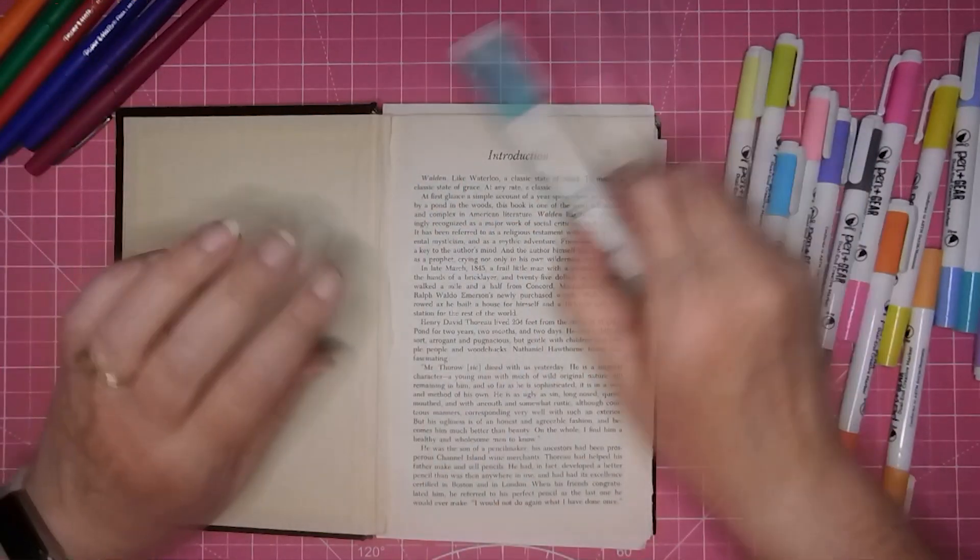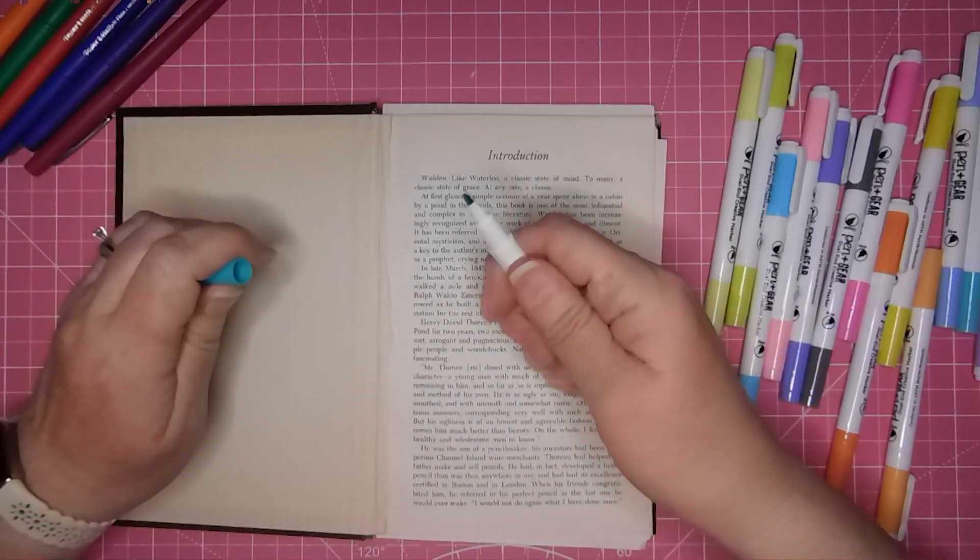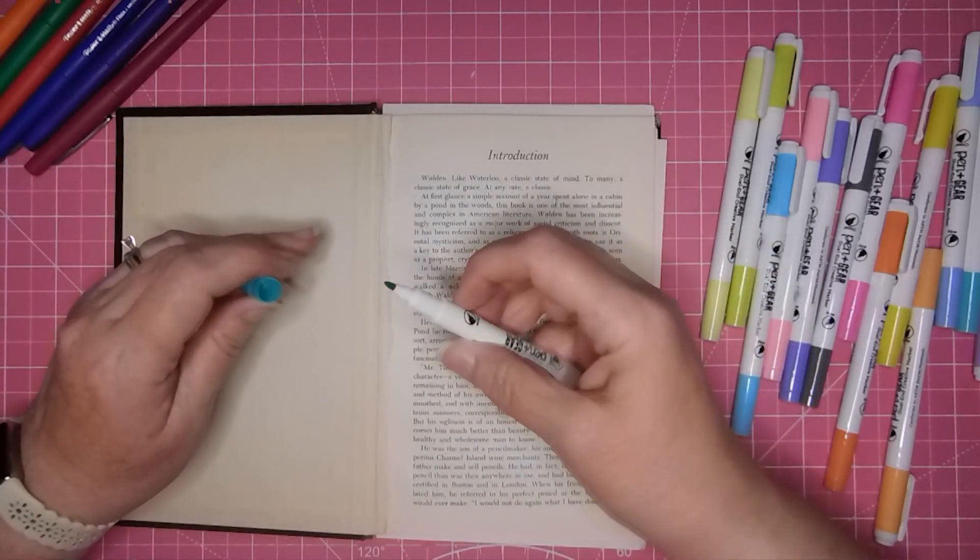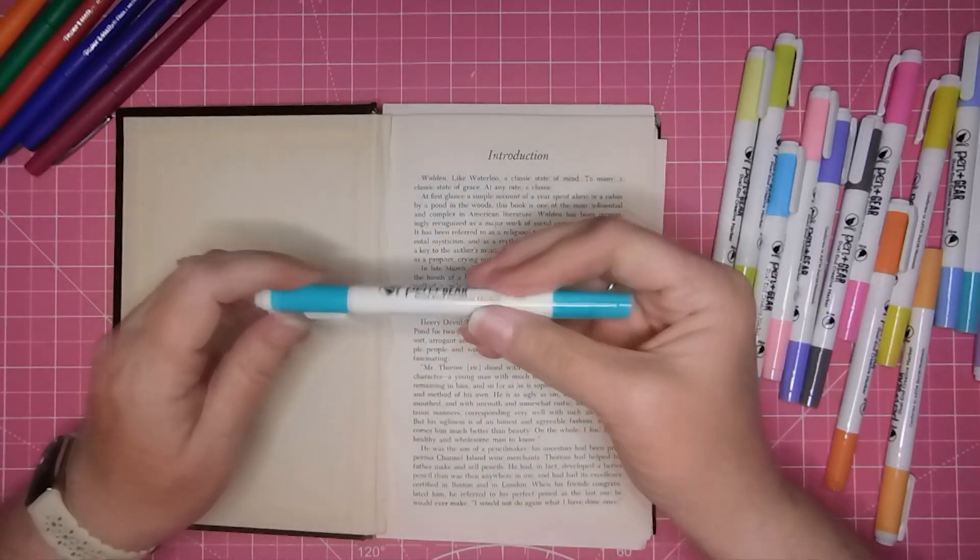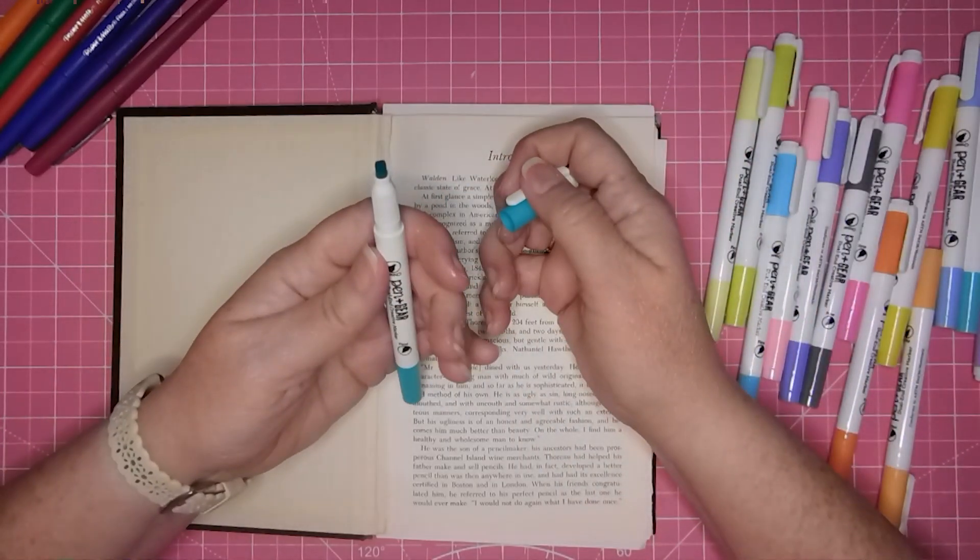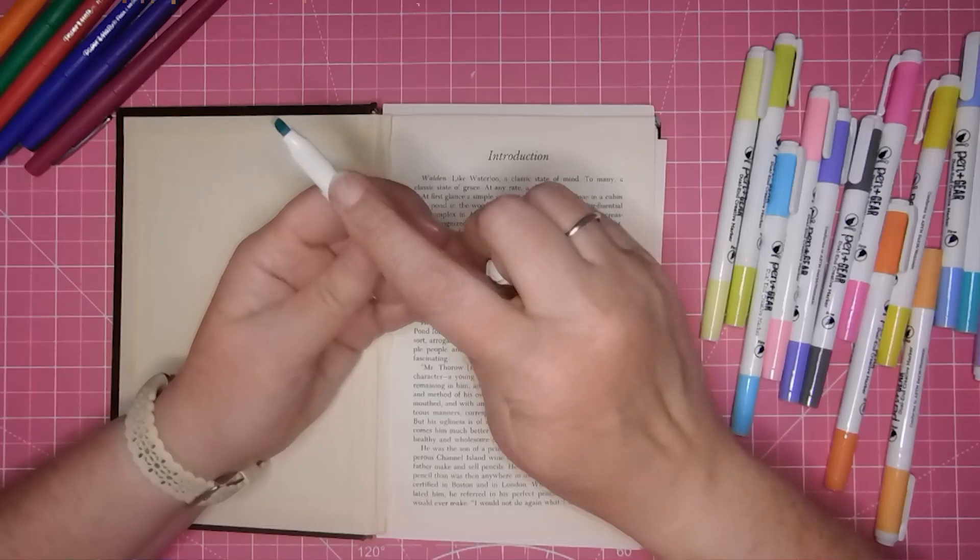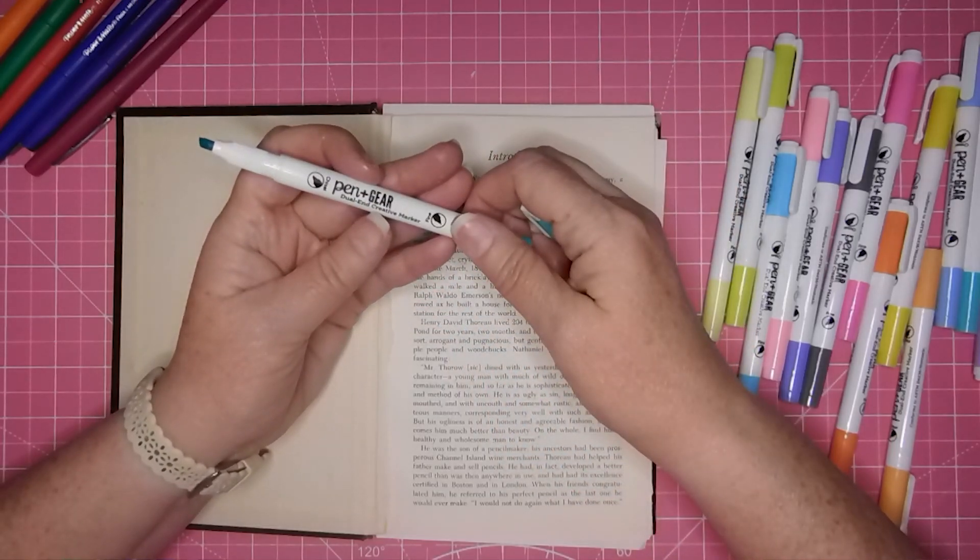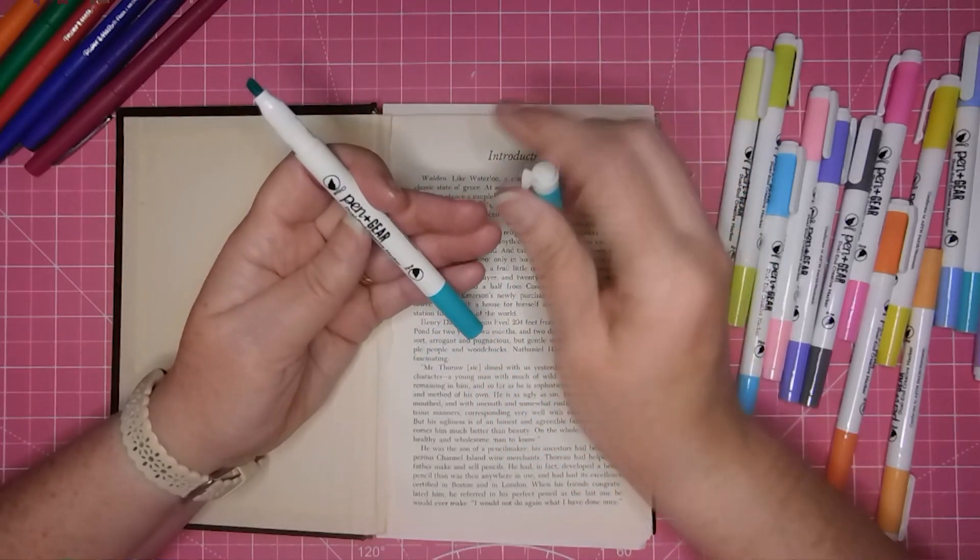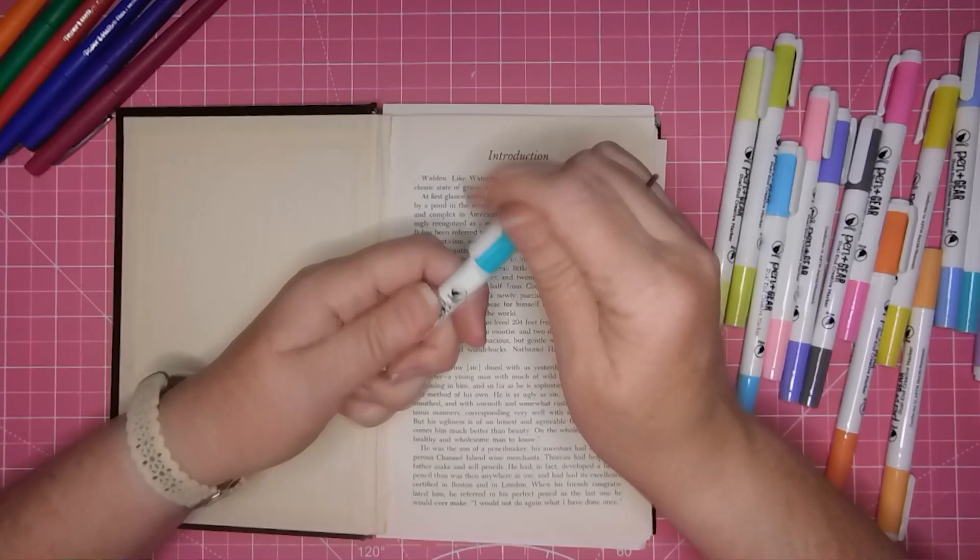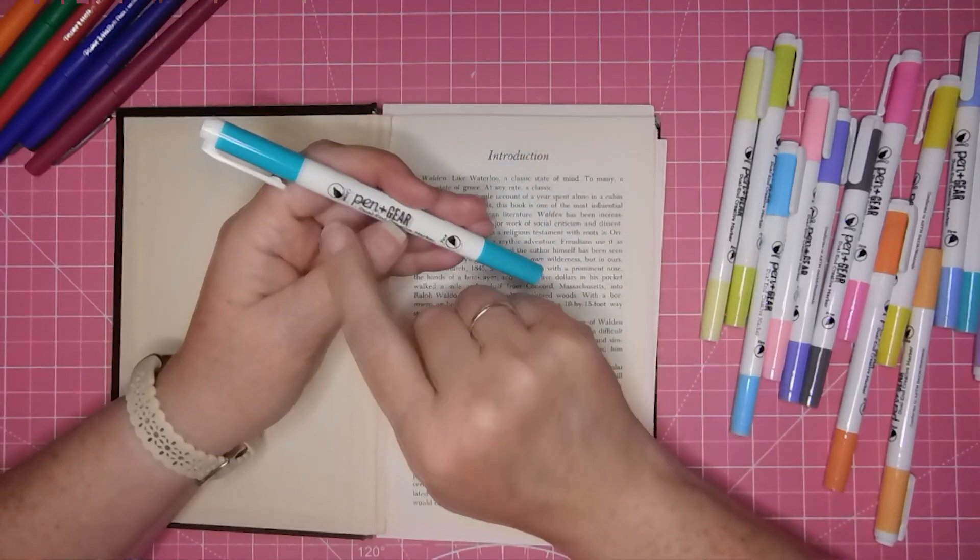Then I have these, which have a pretty good point on one end, medium point. I wouldn't say fine point. And then they have an angled, almost calligraphy type, what do you call it, wedge? Chisel. There you go. It says right here, fine and chisel.